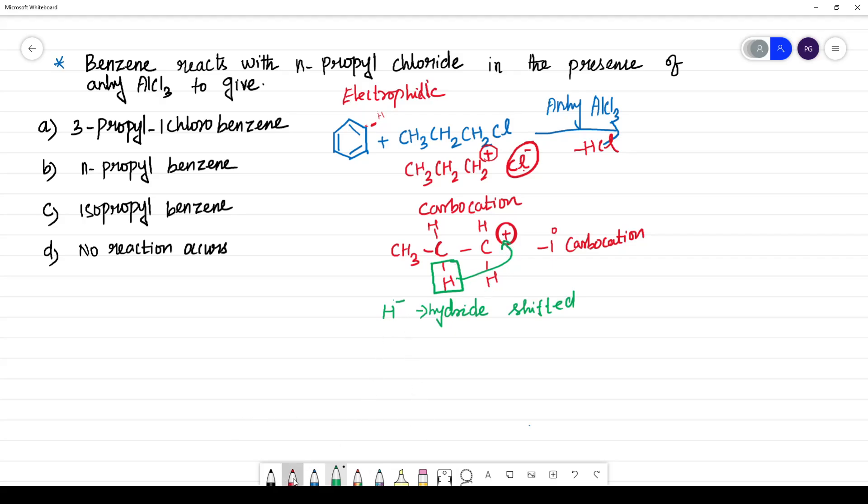So what will be the result now? Now you have CH3 and this is CH, now this is plus because H minus goes here and here you will be having CH3. Now what carbocation is this? This is a secondary carbocation.